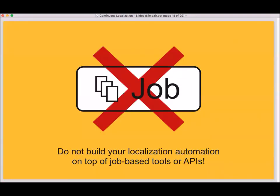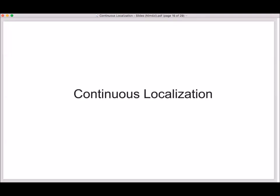So the main takeaway — and this is why I dedicated a special slide for this — is that if you want to create really smooth localization automation, try to avoid job-based tools or APIs. Now let's talk about continuous localization: what does it mean and how it differs from the typical automation we discussed?